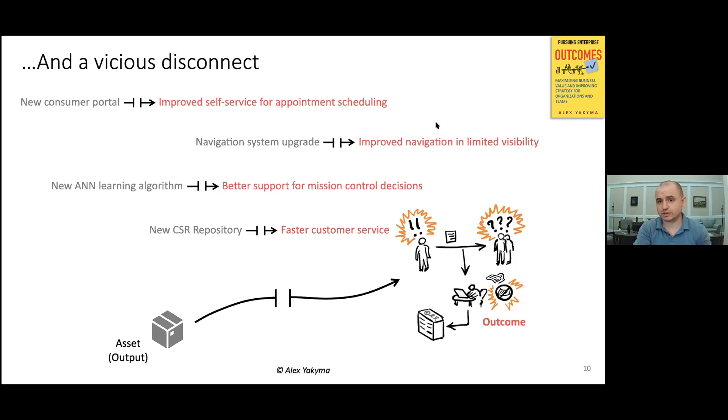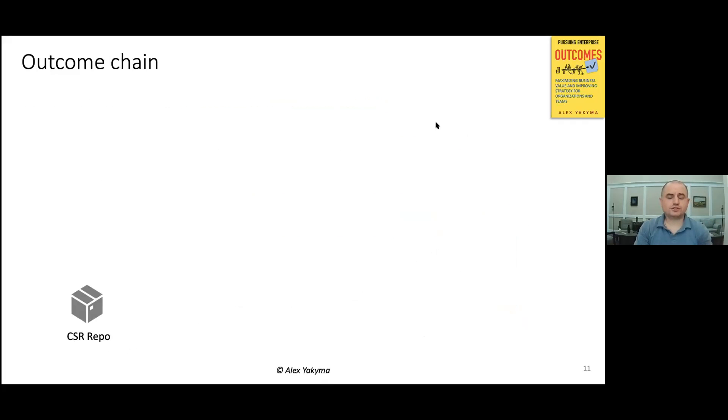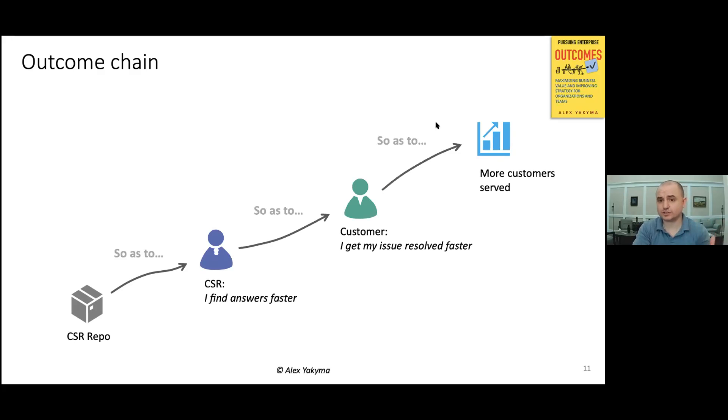And first, we're going to start with an important construct that will help us to better orient ourselves towards outcomes. So let's pick that last example, customer service repository. If we're building it, the first question that we want to ask ourselves is, okay, we're building it so as to what? Okay, so we do this so as to help the CSR, the customer service representative, be able to find answers faster. That's why that customer service repository is in the first place. But let's not stop here. We continue to ask the same question, so as to what? Well, this is so as to the customer would get the issues resolved faster. And even that is not it, but also to have more customers served as a result and so on. Maybe this goes all the way to the financial indicators that matter to that organization. This is what we call outcome chain.